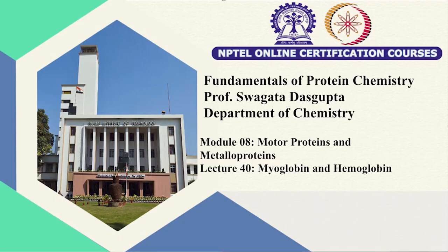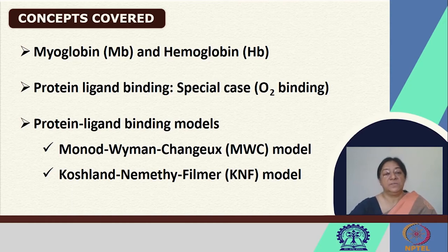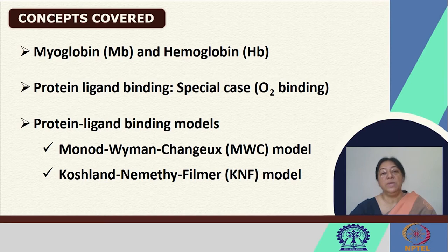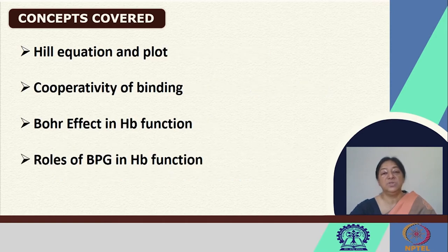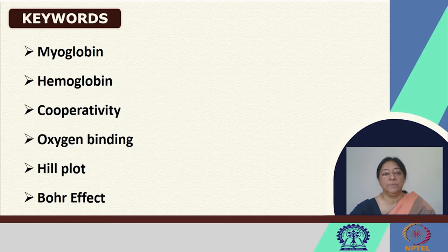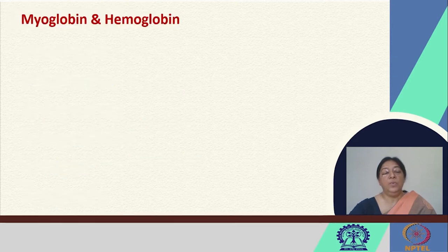When we look at the specific topics related to myoglobin and hemoglobin, it is a special case of protein-ligand binding where we are looking at oxygen binding to two different proteins. We will be looking at different models and concepts related to cooperativity, the Bohr effect, and the roles of specific binding characteristics of some unique molecules to hemoglobin.